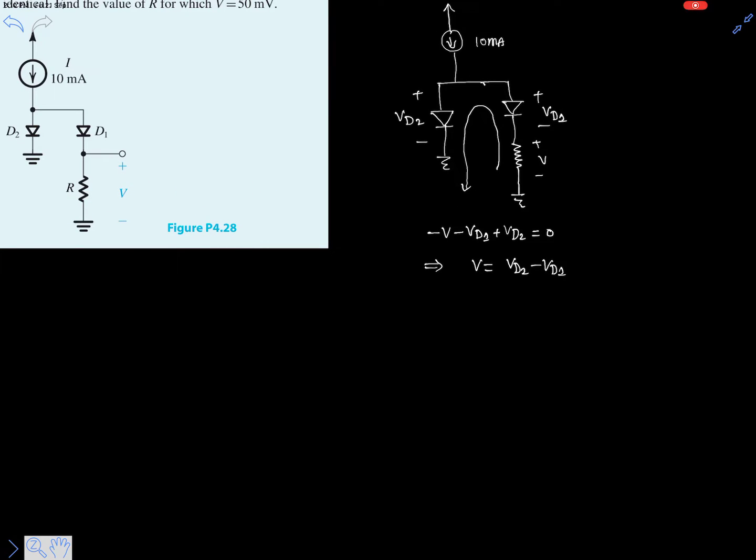This is the most important part for this question. Now we know the diode current equation, that is I equals IS multiplied with the exponential term VD over VT. So let's write equations for ID1: ID1 equals IS e to the power VD1 divided by VT.